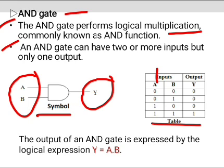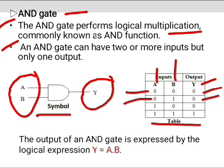Observe the table — A and B are the inputs, Y is the output. In case 1, when both inputs are low, that means A equals 0 and B equals 0, the output Y becomes low, that means 0. In case 2, when A equals 0 and B is high, the output Y becomes low. In case 3, when input A becomes high and B is low, the output Y becomes low, that means 0.